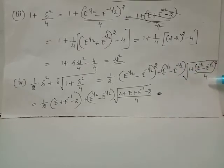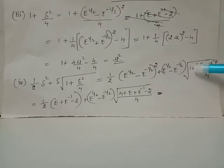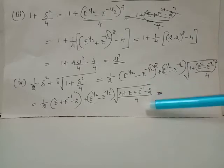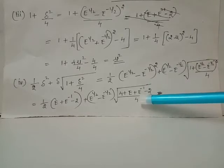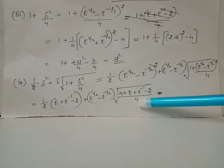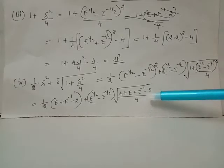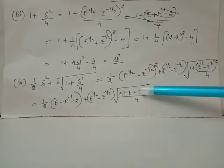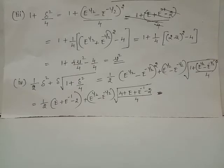When we take the LCM inside the square root, it becomes (4 plus e plus e-inverse minus 2) upon 4. When the denominator 4 is taken outside the square root it becomes 1/2. In the numerator we obtain e plus e-inverse plus 2.